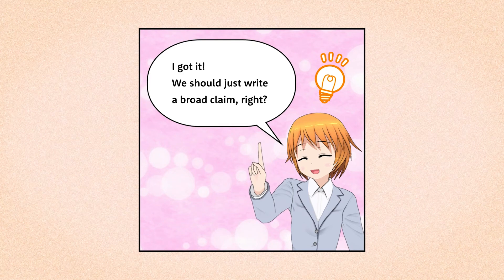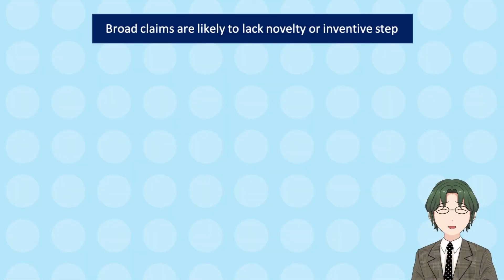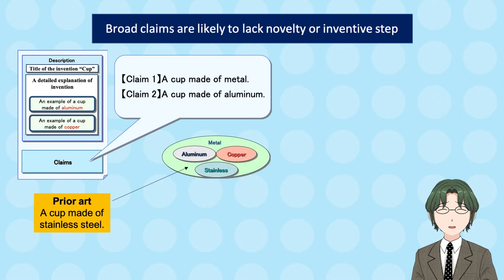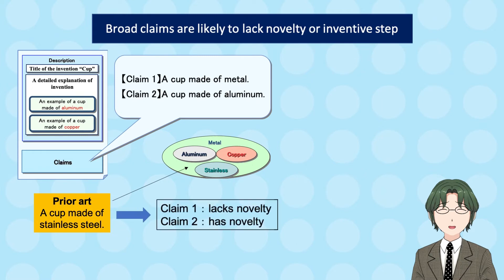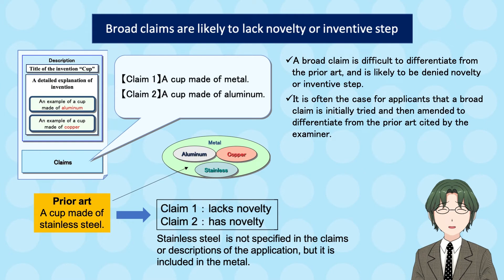We should just write a broad claim, right? Well, broad claims are likely to lack novelty or inventive step. Let's suppose the examiner finds a prior art: a cup made of stainless steel. In this case, claim 1 lacks novelty while claim 2 has novelty. Stainless steel is not specified in the claims or descriptions, but it is included in the metal. A broad claim is difficult to differentiate from prior art and is likely to be denied novelty or inventive step. It is often the case for applicants that a broad claim is initially tried and then amended to differentiate from the prior art cited by the examiner. Make sure you include in your claims the points that differentiate your invention from the prior art.